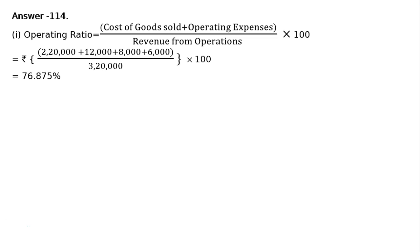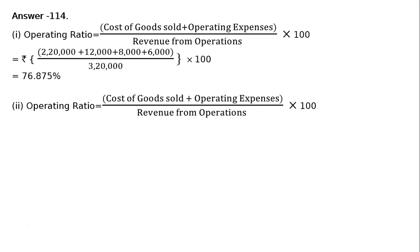Then Part B: Revenue from operations is given, both cash and credit. Gross profit is given. Office and selling expenses are given. Calculate operating ratio.